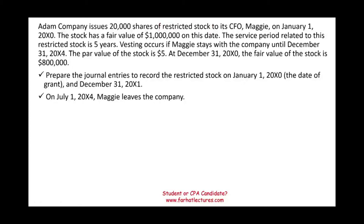Restricted stock is a form of compensation. Adam Company issues 20,000 shares of its restricted stocks to its CFO Maggie on January 1st, 20X0. The stock has a fair value of a million dollars on that date. The service period related to the restricted stock is five years. Vesting will occur if Maggie stays with the company until December 31st, 20X4.